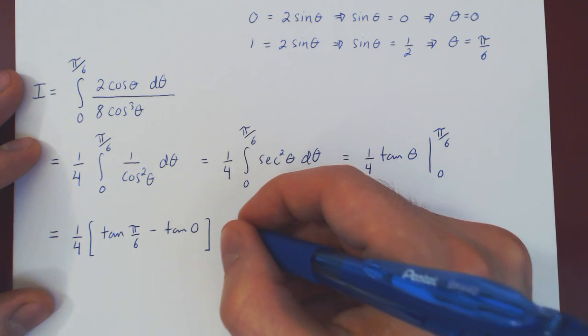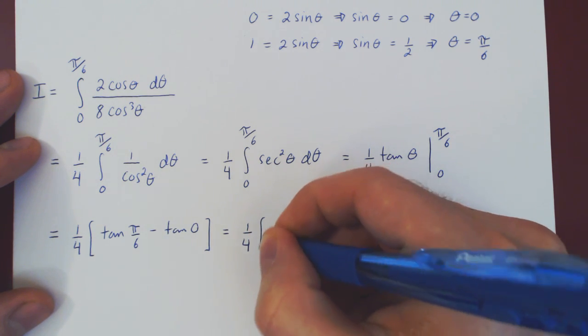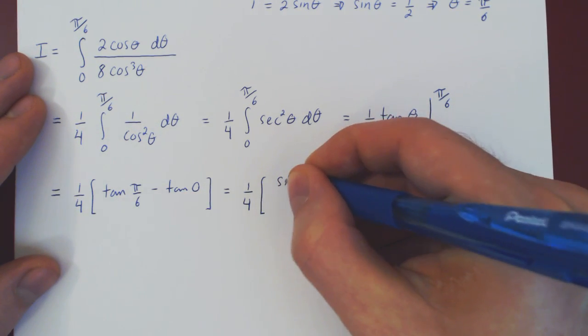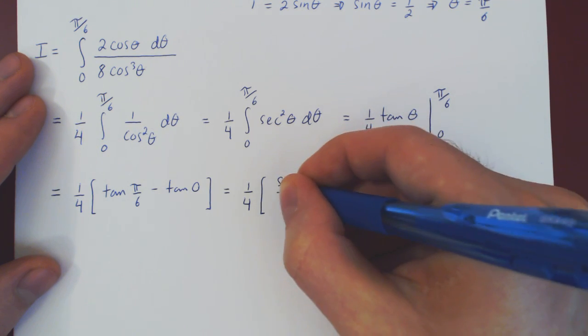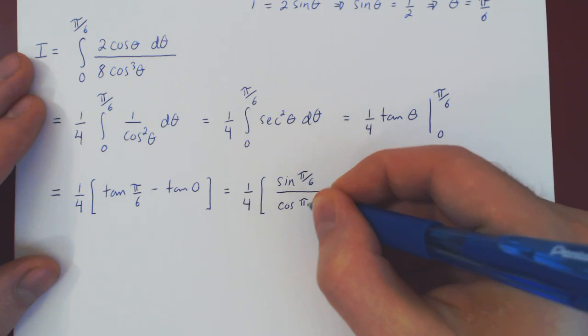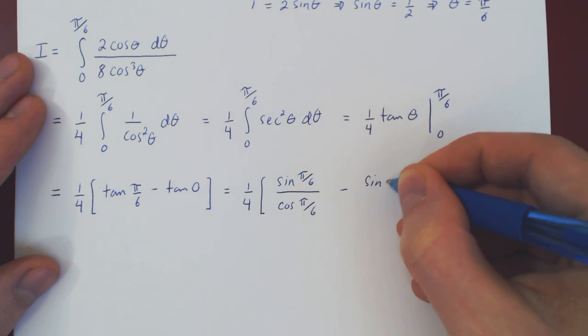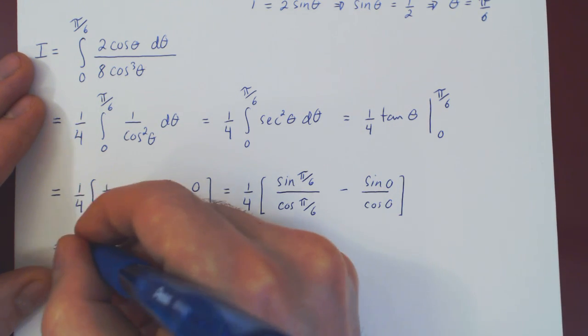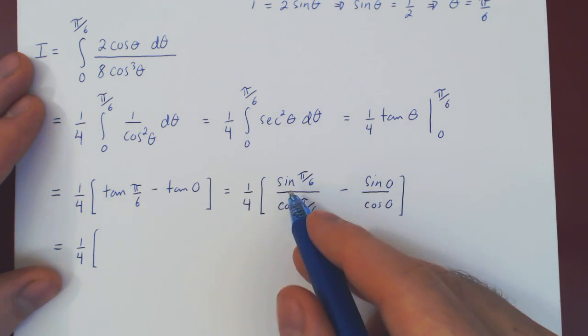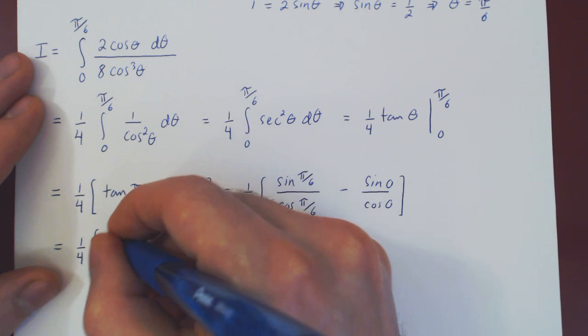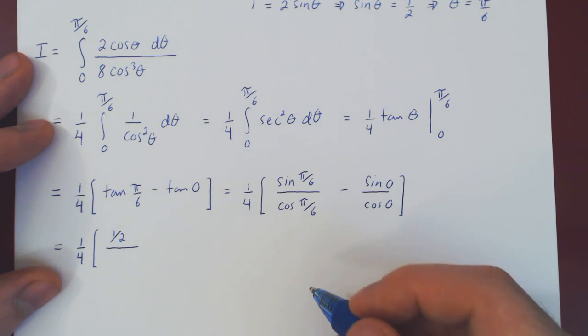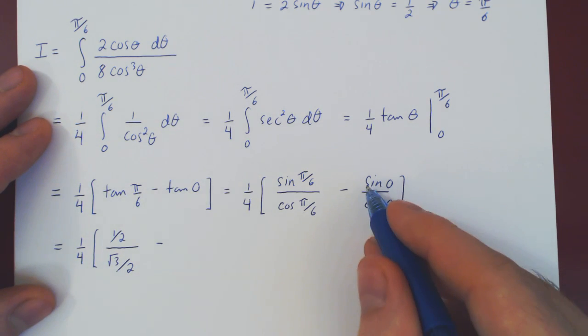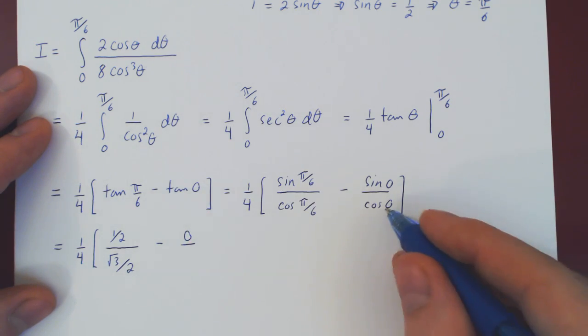And now let's simplify. Tangent, of course, is sine over cosine. So now what we have is sine of pi over 6 over cos of pi over 6 minus sine of 0 over cos of 0 equals a quarter. Sine of pi over 6 we know is 1 half. Cos of pi over 6 is root 3 over 2 minus sine of 0 is 0 over cos of 0, which is 1.